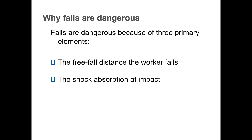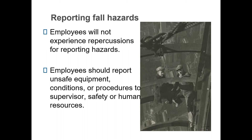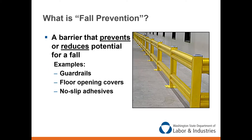Falls are dangerous because of three primary elements: free fall distance, shock absorption at impact — whether landing on concrete or water makes a difference — and body weight. The free fall velocity at impact when falling 12 feet is nearly 20 miles per hour, and a person hits the ground in less than one second from that distance. Always report fall hazards — employees should not face repercussions for reporting unsafe equipment, conditions, or procedures.